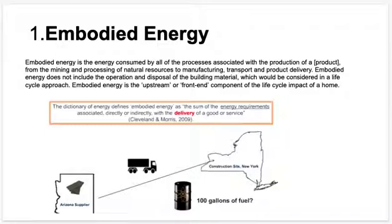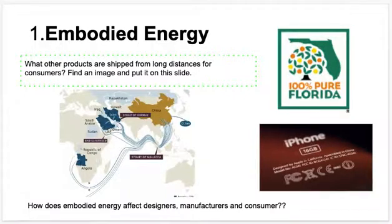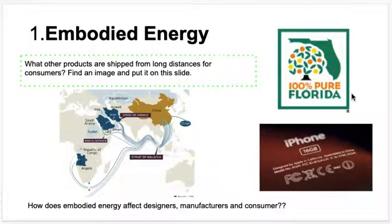All those different systems create the embodied energy — how much energy a product has. For example, you see orange juice labelled 100% pure Florida orange juice. The crops and materials are from Florida, but it gets shipped internationally. All of that energy usage — transportation, physical labor, energy involved in moving boxes or harvesting the fruits — all that stuff is what creates embodied energy.